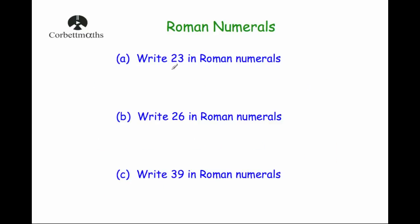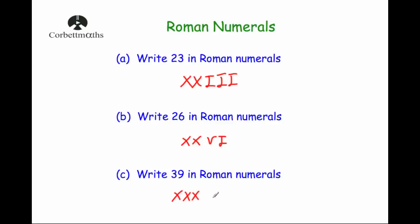Now let's look at some examples. Write twenty-three in Roman numerals — twenty is XX and the units are III, so XXIII. Make sure all letters are in capitals. Write twenty-six — twenty is XX and six is VI, so XXVI. Write thirty-nine — thirty is XXX and nine is one before ten, so IX, giving us XXXIX.